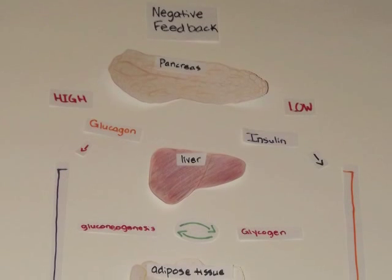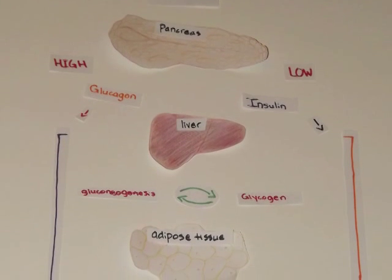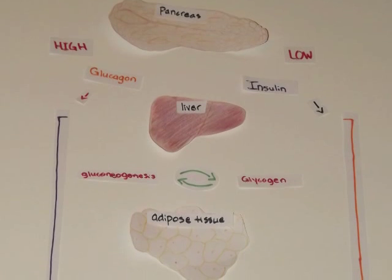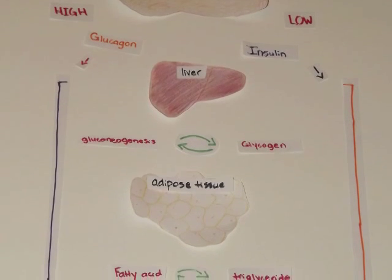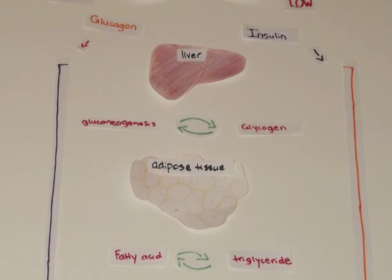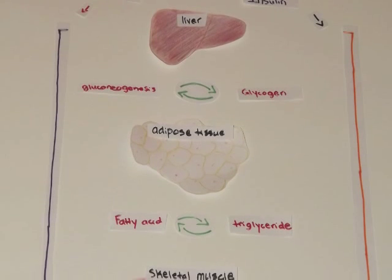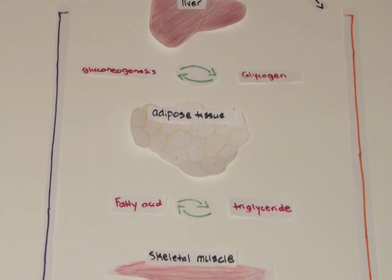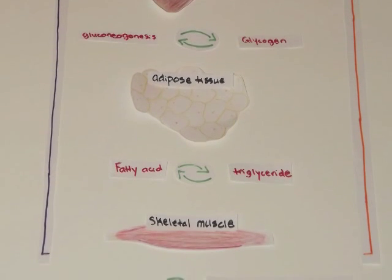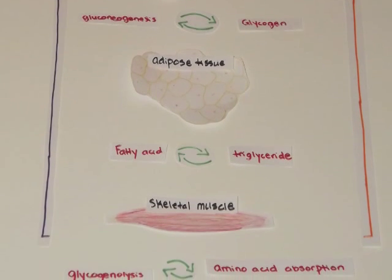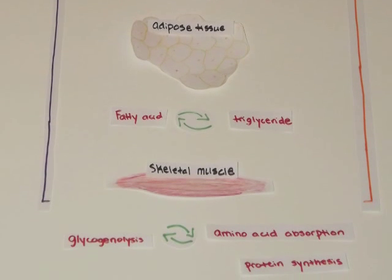Here is a summary of the negative feedback mechanism, with special attention to the effects the pancreatic hormones have on each target organ. This demonstration has displayed just how insulin and glucagon work in the body to maintain blood glucose levels.